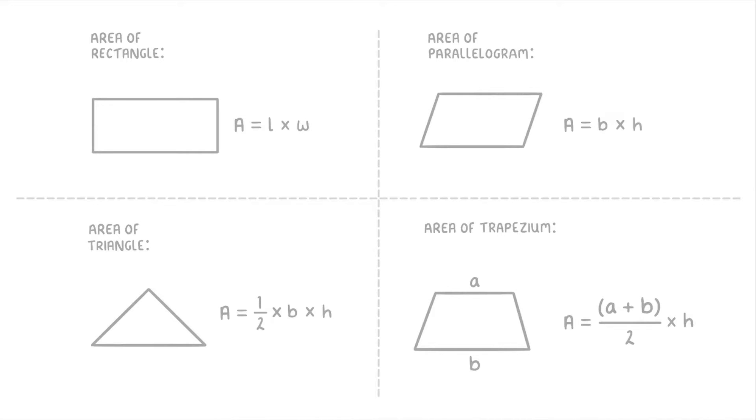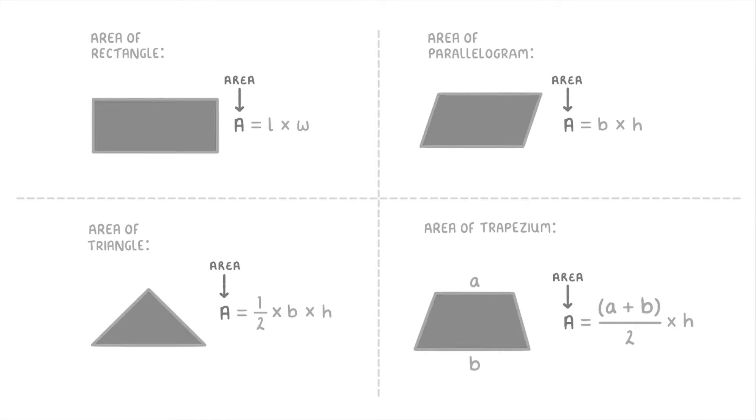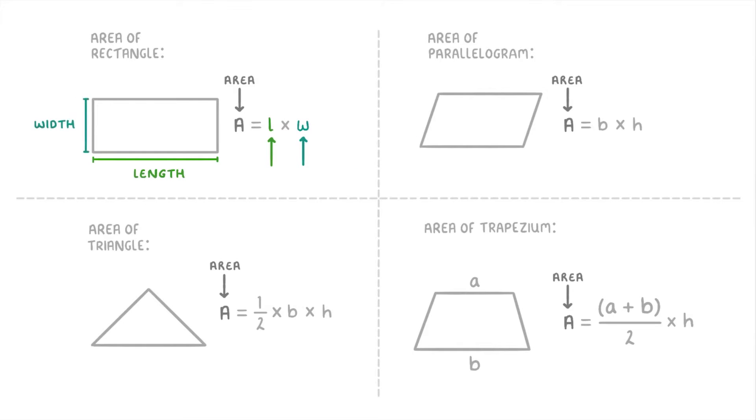Before we start I just want to point out what all of the different letters mean. The capital A on the left of each equation stands for area which is all of the space inside of each shape and is what we're trying to find. Then L stands for length which is how long the shape is, W stands for width which is how wide the shape is, B stands for base which is the length of the bottom side, and H stands for height which is how tall the shape is. Then the last one is this lowercase a which we find in the trapezium equation and represents the length of the top side of a trapezium.